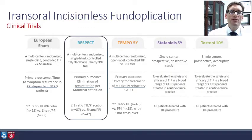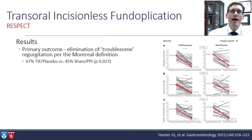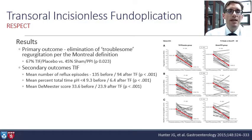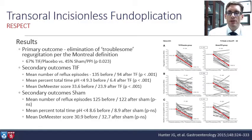Moving on to the RESPECT trial — a multi-center, randomized, single-blind, controlled study looking at TIF and placebo versus sham and PPI. The main outcome was elimination of troublesome regurgitation per the Montreal definition, with a 2-to-1 randomization: 87 patients in the treatment group and 42 in the control. 67% of the TIF placebo group achieved elimination of troublesome regurgitation, versus only 45% of the sham group. Secondary outcomes — mean number of reflux episodes, mean percent total time pH less than 4, and mean DeMeester score — all improved with statistical significance in the TIF group, while none improved significantly in the sham group.